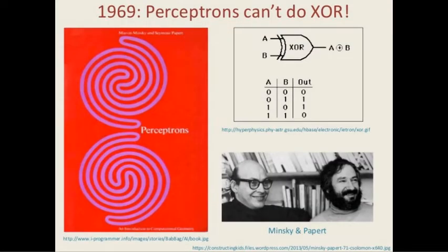Several years after the perceptron was proposed, researchers still could not improve the performance of the model. In 1969, Marvin Minsky, founder of the MIT AI lab, published a book called Perceptrons. In this book, Minsky showed many research results about neural networks — all of them very pessimistic. His book concluded that neural networks are dead. One of the most famous examples is that Perceptron cannot perform XOR. Let me show you an example.